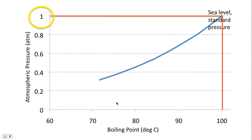When we are at sea level and we have standard pressure, we're going to note that atmospheric pressure as being 1 atm. Notice that the temperature at which water boils at is 100 degrees Celsius. This is what we have known for most of our lives.